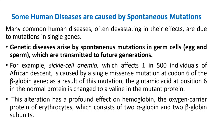Many common human diseases, often devastating in their effects, are due to mutations in single genes. Genetic diseases arise by spontaneous mutations in germ cells which are transmitted to future generations. For example, sickle cell anemia, which affects 1 in 500 individuals of African descent, is caused by a single missense mutation at codon 6 of the beta globin gene. As a result of this mutation, the glutamic acid at position 6 in the normal protein is changed to valine in the mutant protein, which has a profound effect on hemoglobin — the oxygen carrier protein of erythrocytes, consisting of 2 alpha globin and 2 beta globin subunits.